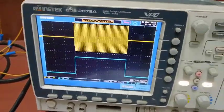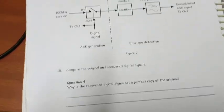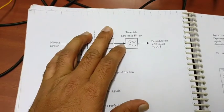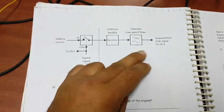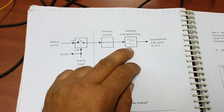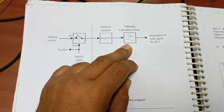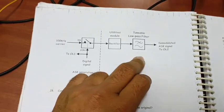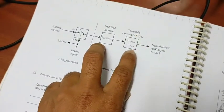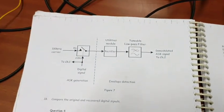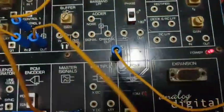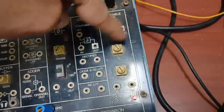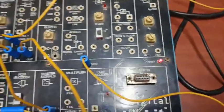Now we will see ASK demodulation, the second part of this experiment. For the demodulation part, as you already know, an envelope detector is used. For the envelope detector there is a rectifier and an RF baseband low-pass filter — you can use both; they are the same. So for demodulation there is an envelope detector, which consists of a rectifier and a tunable low-pass filter.